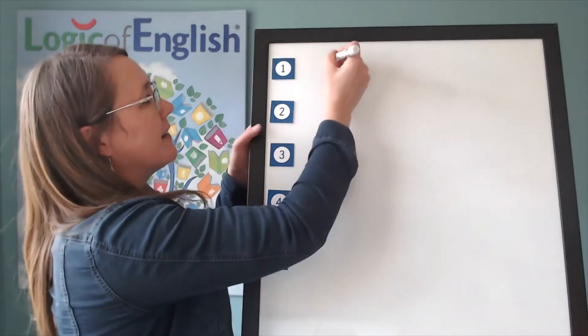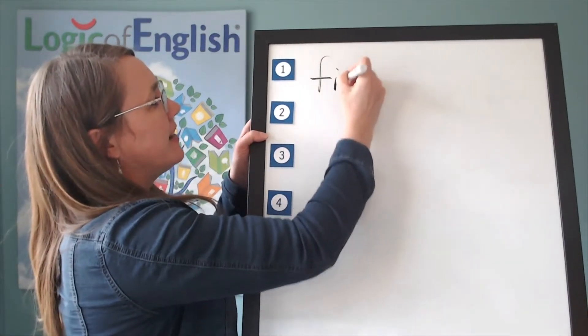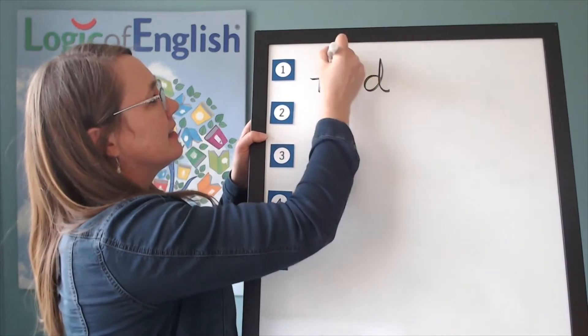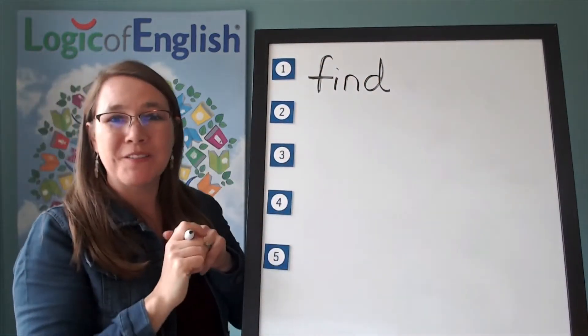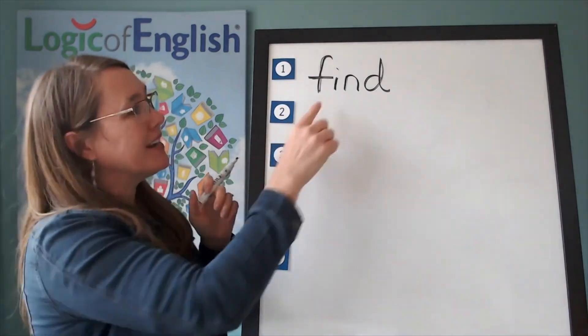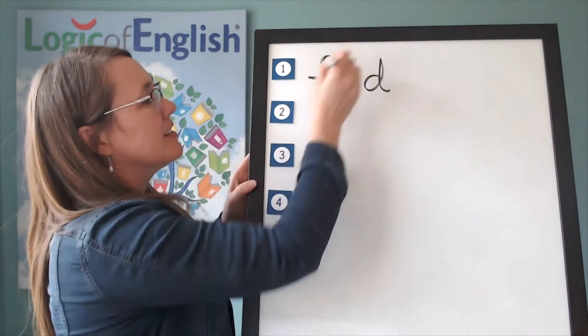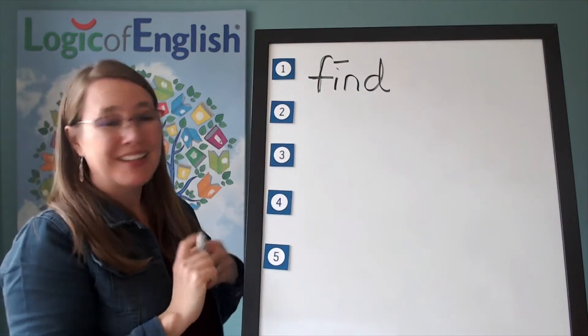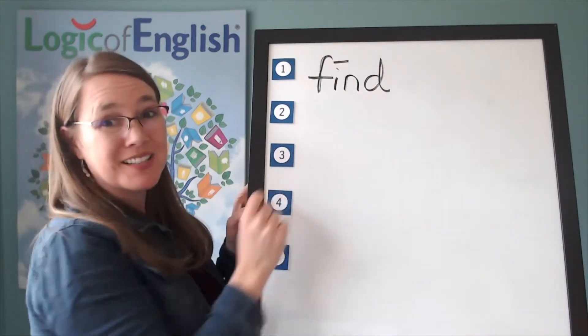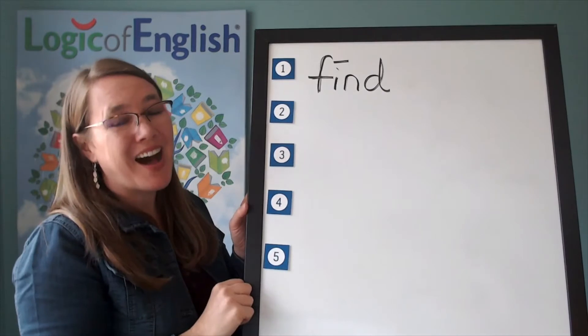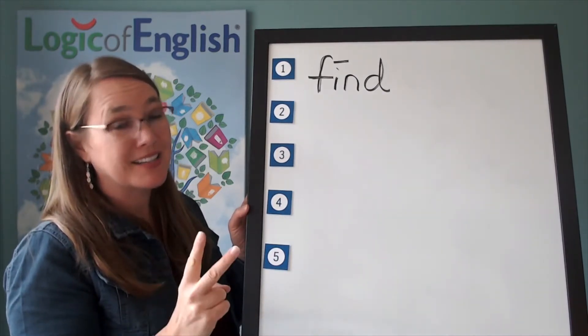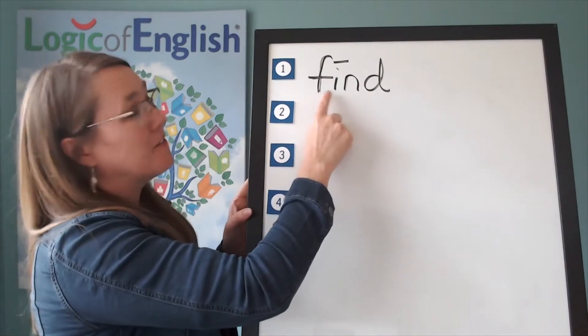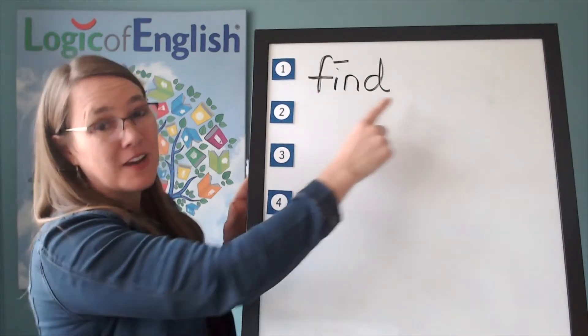Help me to write it. F-I-N-D. Alright, so how will we mark find? You're right. The I is saying its long sound. Why? It's before two consonants. What's the rule? I and O may say I and O before two consonants. Let's sound it out. F-I-N-D. Find.